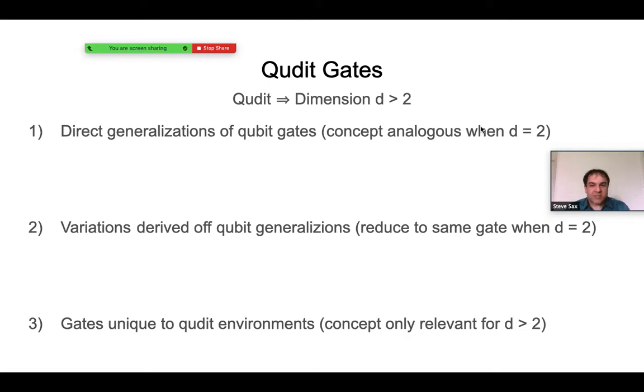First, those that are direct generalizations of qubit gates. Second, those that are variations derived off qubit generalizations. And third, those gates that are really unique to Qudit environments themselves. We'll see some examples spanning all three of these categories, and we'll start with those that are direct generalizations of qubit gates.